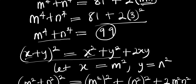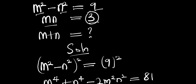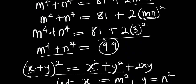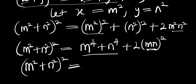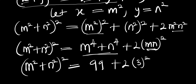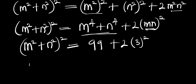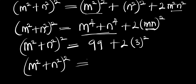Recall we have m⁴ plus n⁴ equals 99, and mn equals 3. Substituting in, we get (m² + n²)² equals 99 plus 2 times 3², which gives us 99 plus 18 equals 117.